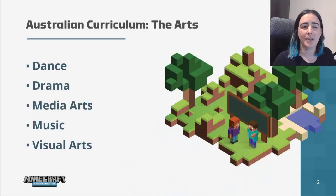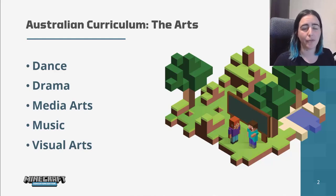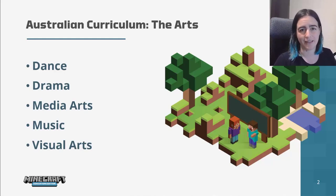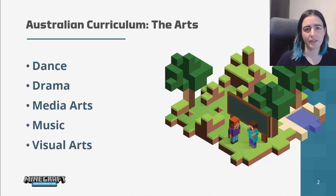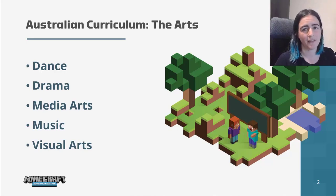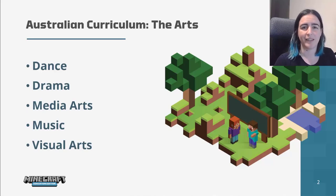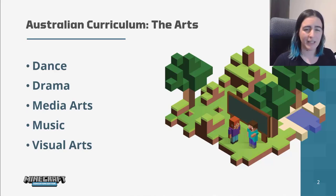In the Australian curriculum, the arts are split up into five different subject areas. The extent to which these are offered in schools across the country will depend on the school, but the five subject areas are dance, drama, media arts, music, and visual arts.